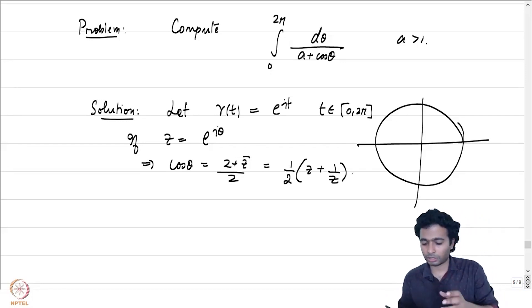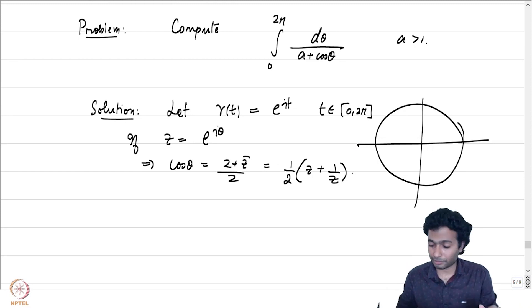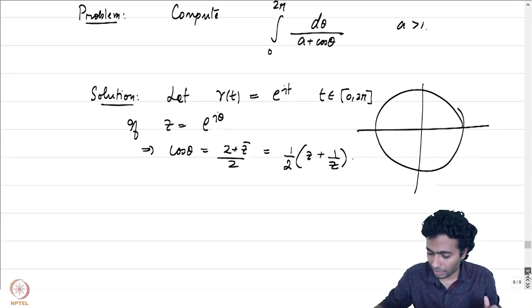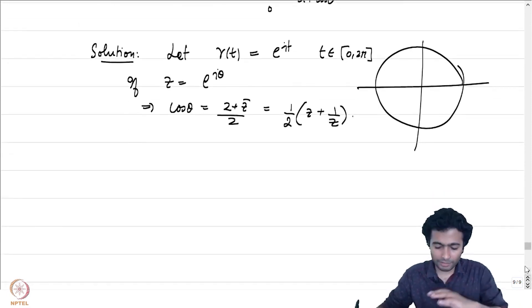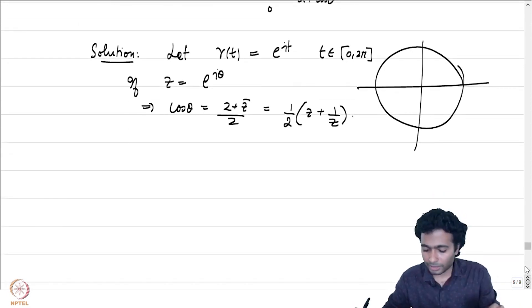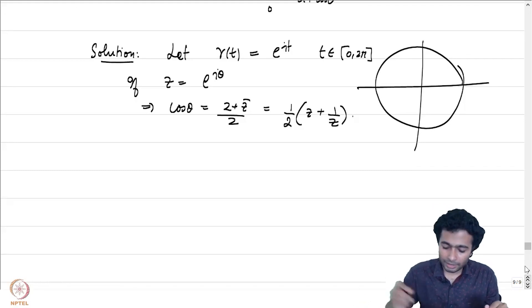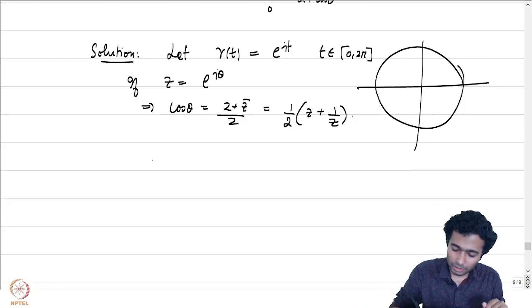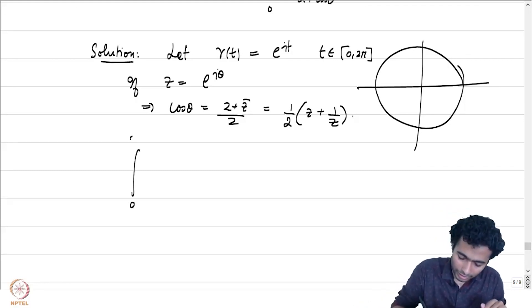But we know that on the unit circle, z̄ = 1/z, so we can write cos θ as (z + 1/z)/2. The denominator involving cos θ can be written as (z + 1/z)/2, and at the right time we will go back to that.